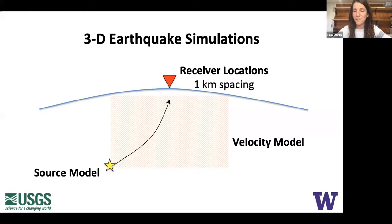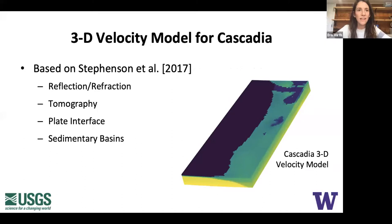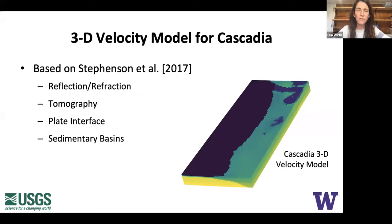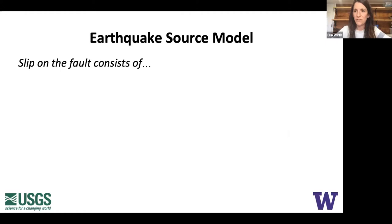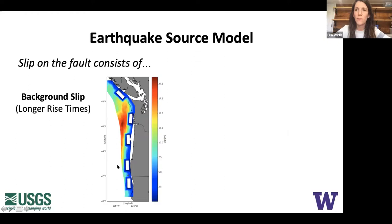We use a finite difference method. We save ground motions everywhere in the Pacific Northwest on a one-kilometer grid — about 600,000 sites per simulation with synthetic ground shaking records. For the 3D structural model, we use a seismic velocity model developed by Bill Stevenson at the USGS, based on studies done in the Pacific Northwest over past decades: reflection and refraction experiments, tomography, information about plate interfaces, and constraints on sedimentary basins from local experiments. We've also validated this 3D model against the 2001 Nisqually earthquake and numerous other small local events.